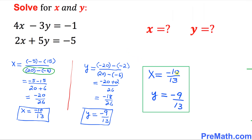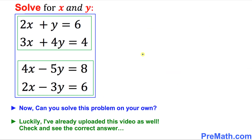So x equals negative 10 over 13 and y equals negative 9 over 13 is our solution to this system of equations. Here is your assignment — can you do this one on your own? Take your time. Luckily I have already uploaded a video for it as well, so please go ahead and check out the correct answer. Thanks for watching and please don't forget to subscribe to my channel for more exciting videos. Bye!